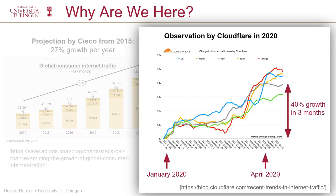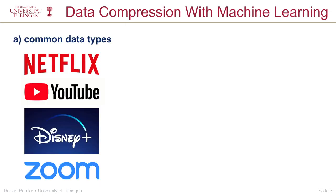Here's some data published by Cloudflare, who run one of the biggest content delivery networks. They saw about 40% growth in their traffic over the first four months of the year 2020 alone. Now, if we want to cope with this enormous growth of internet traffic, we have to use effective data compression. And it's getting increasingly evident that machine learning methods will lead the way to a really new generation of compression codecs with significantly better performance.